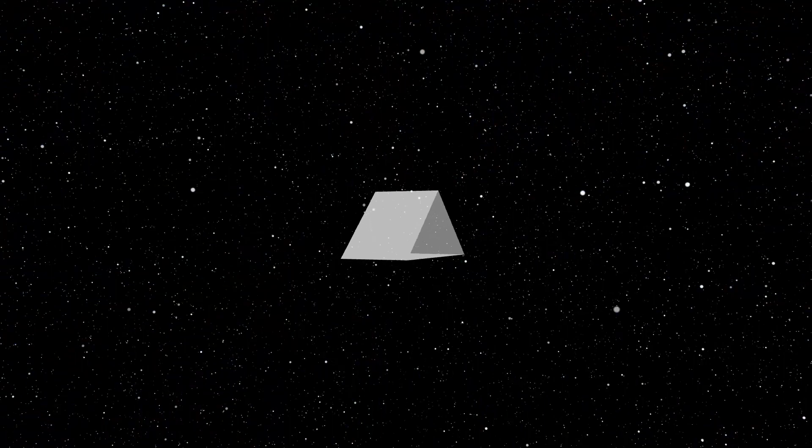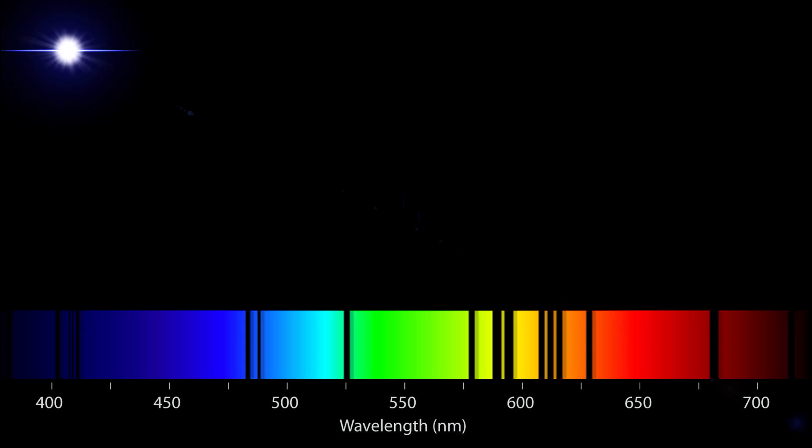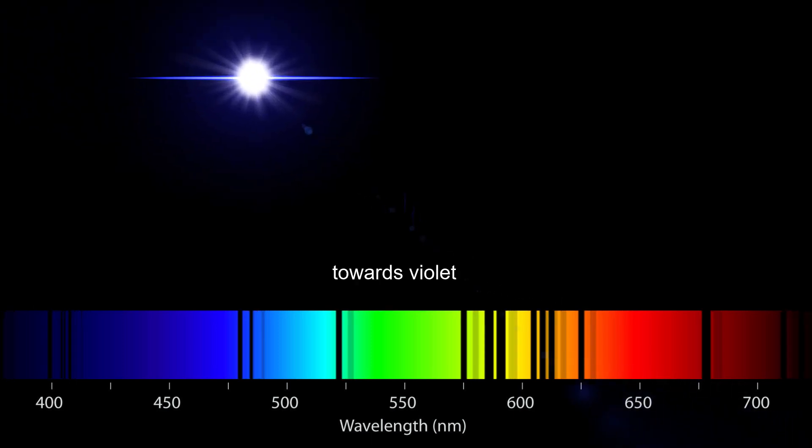Now, an interesting thing happens when a light source moving relative to a detector is detected through a prism. We'll still see the colors and the Fraunhofer patterns, but the patterns will be shifted towards the violet or red.